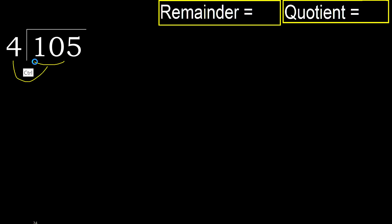10 is not less, so we work with 10. 4 multiplied by which number is nearest to 10 but not greater? 4 multiplied by 3 is 12 — 12 is greater. 4 multiplied by 2 is 8 — 8 is not greater. 10 minus 8 is 2.